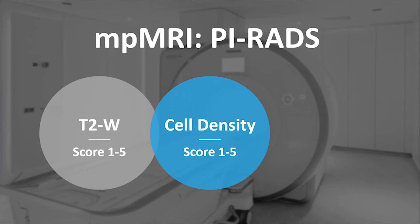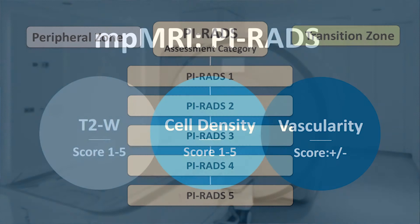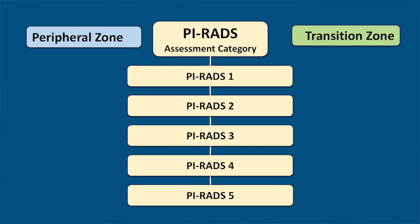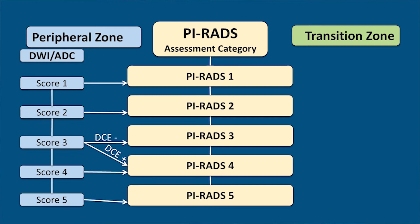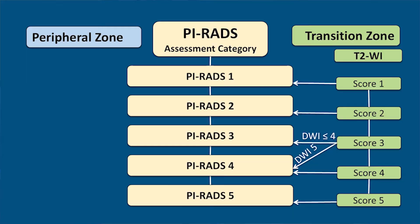If we have a lesion in the peripheral zone, diffusion-weighted imaging is the dominant sequence — it determines the final assessment category. A 1 makes a 1, a 2 a 2, a 4 a 4, a 5 a 5. However, when we have a 3, contrast is important: a score of 3 for diffusion in the peripheral zone with a positive contrast is upgraded to a 4. In the transition zone, T2 tissue structure is the most important. When we have a 3, diffusion-weighted imaging is the referee — if there is an abnormality on diffusion it becomes a 4; if there is no abnormality, it remains a 3.